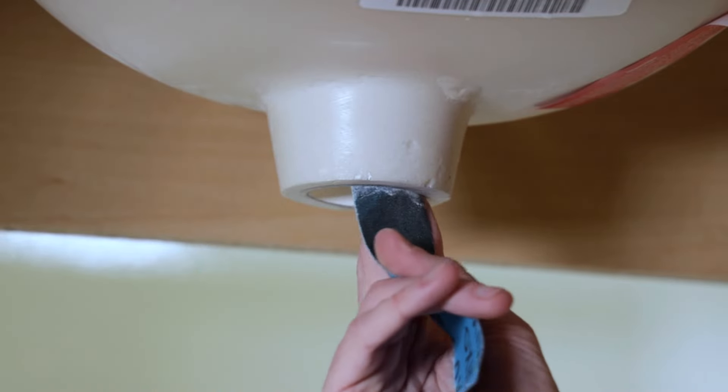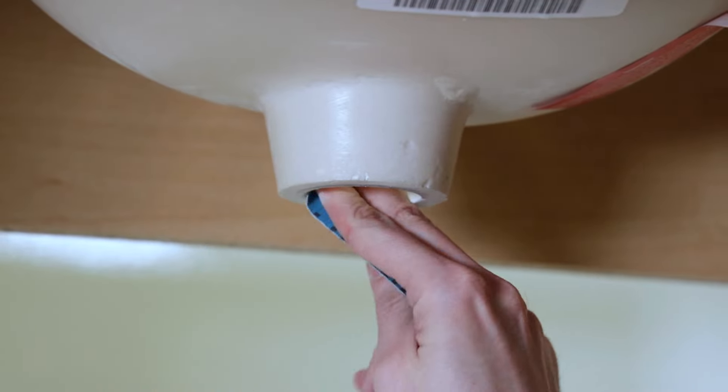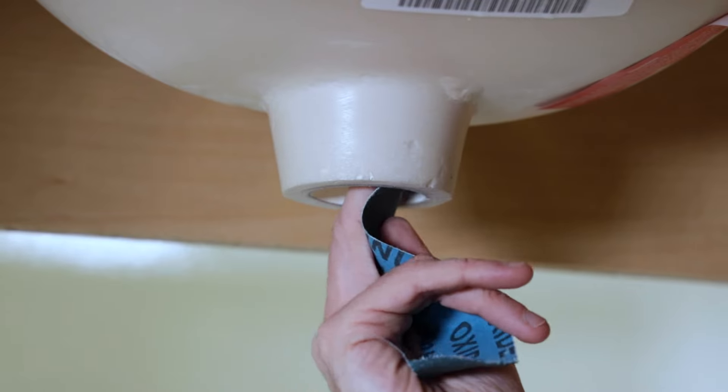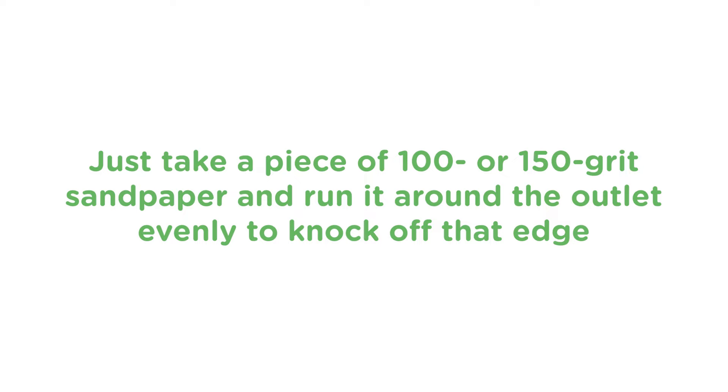If you're installing the pop-up on a new cultured marble sink like this one, sometimes the edge of the outlet can be sharp, so we'll want to sand that lightly to eliminate that sharp edge. It could cut into the beveled washer that makes a watertight seal to the sink, so just take a piece of 100 or 150 grit sandpaper and run it around the outlet evenly a few times to knock off that edge. Once it's smooth and even, we should be good to go.